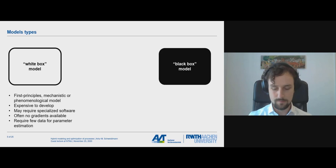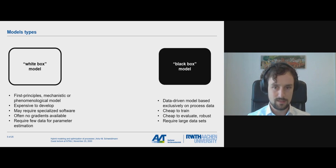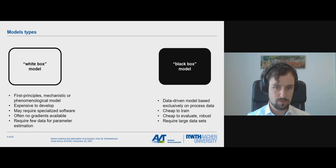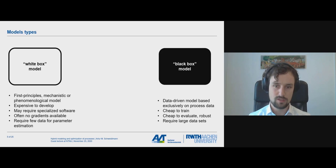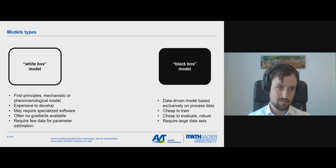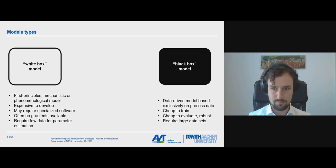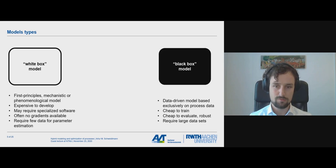On the other side, what you probably learned in this course is black box modeling. One example of a black box is a neural network. These data-driven models are based exclusively on process data. They're very cheap to train and evaluate — once you've fitted a neural network, it's super cheap to get an evaluation. It's also very robust, and we get all the necessary gradient information for optimization. However, since the black box models rely purely on data, we usually need quite a large amount of data to fit them.